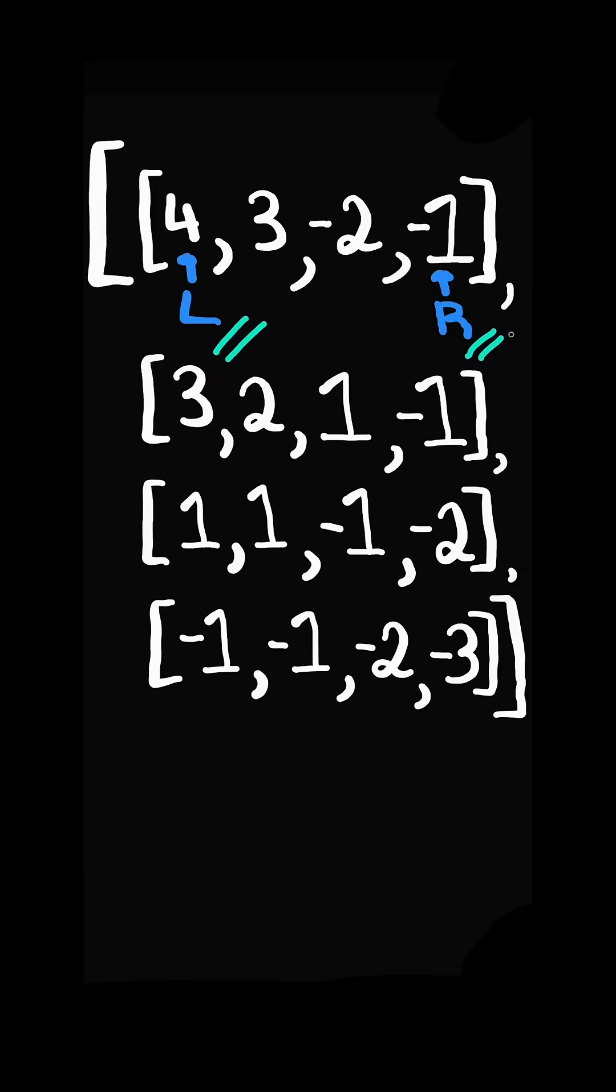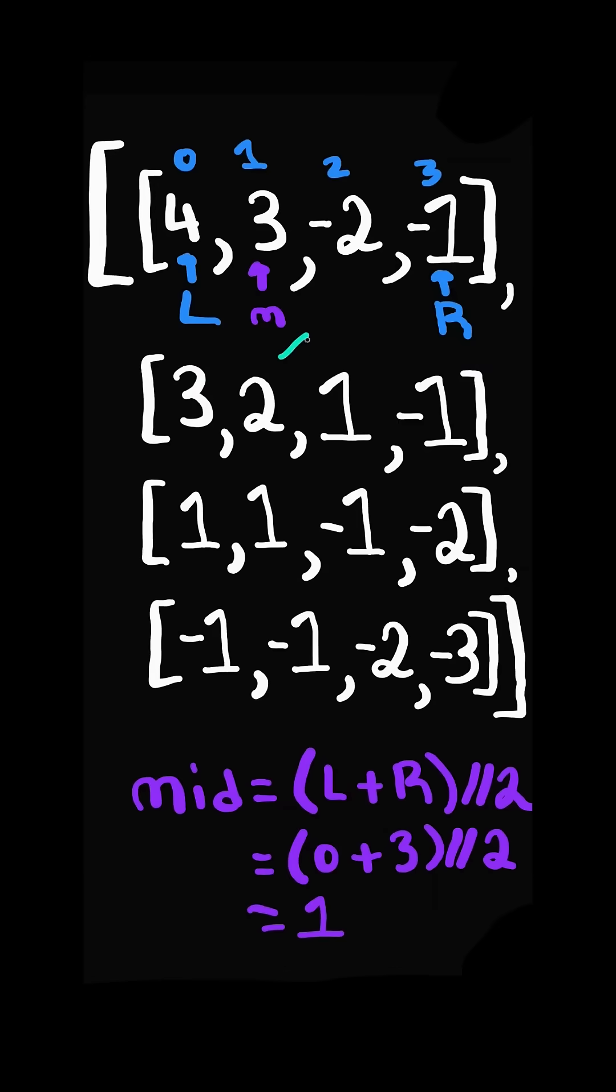We will have two pointers, l and r. We calculate the midpoint. If the midpoint points to a positive number, then we increment l to mid plus 1 and we continue.